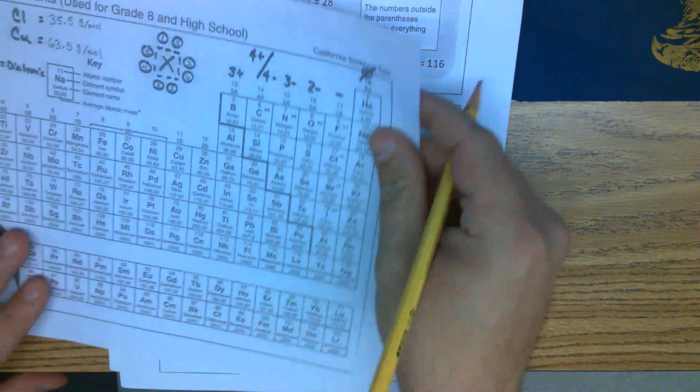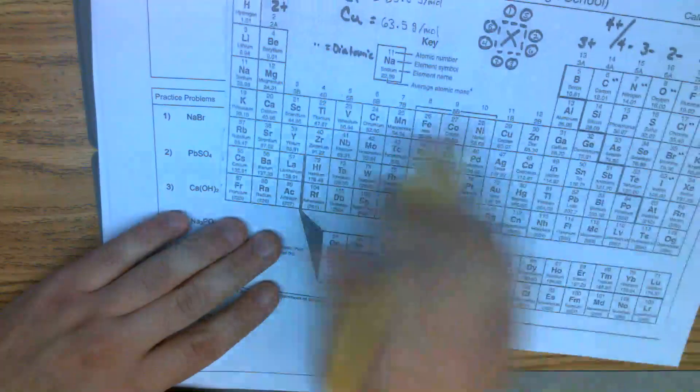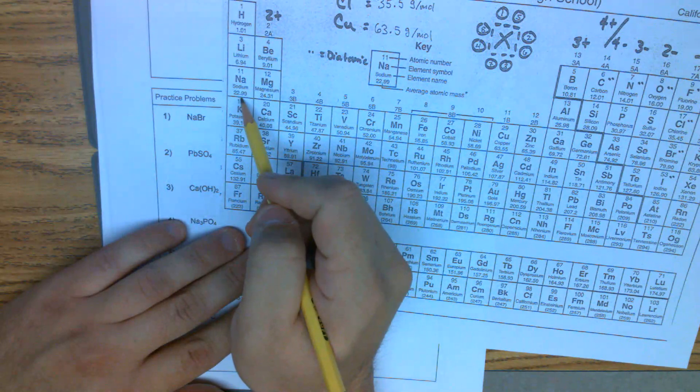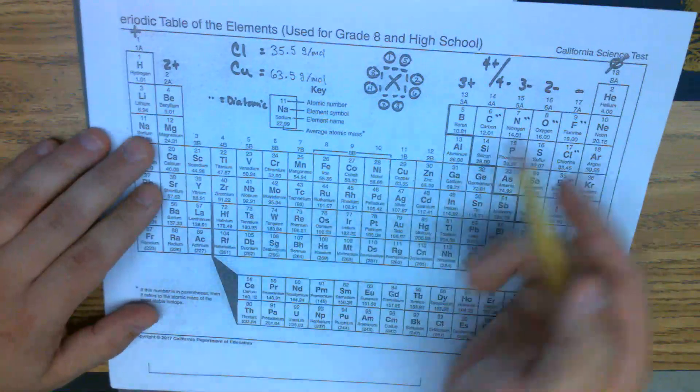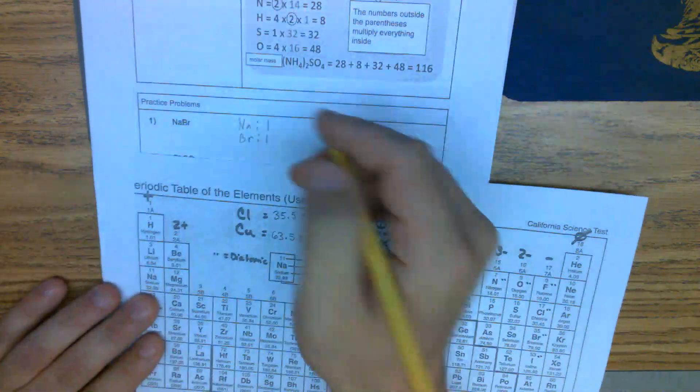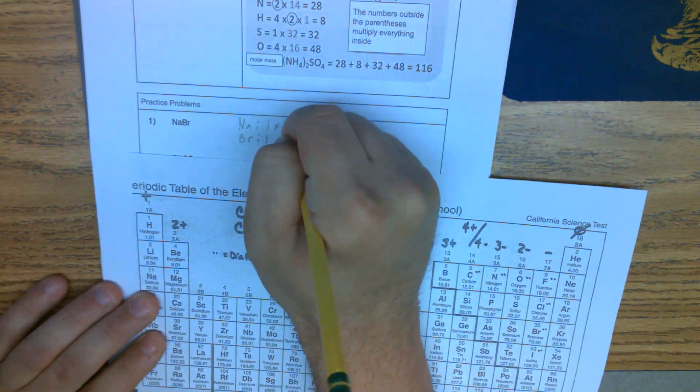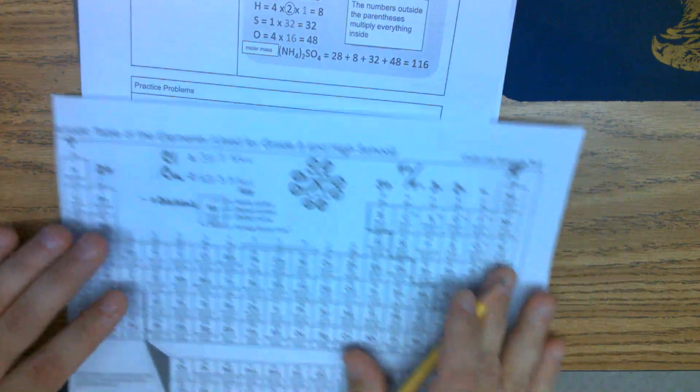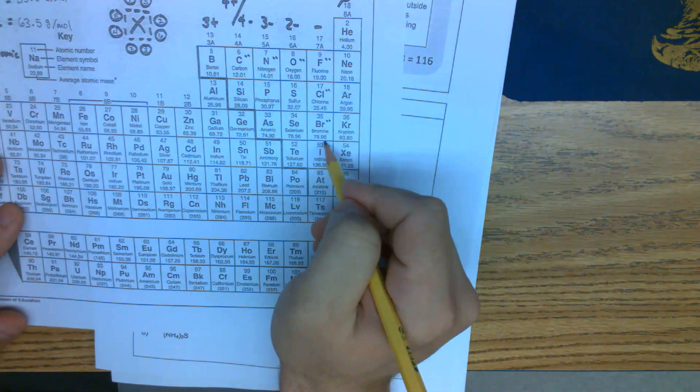For our masses, Na is 22.99, Br is 79.90. So let's write those down. And Br is 79.90.